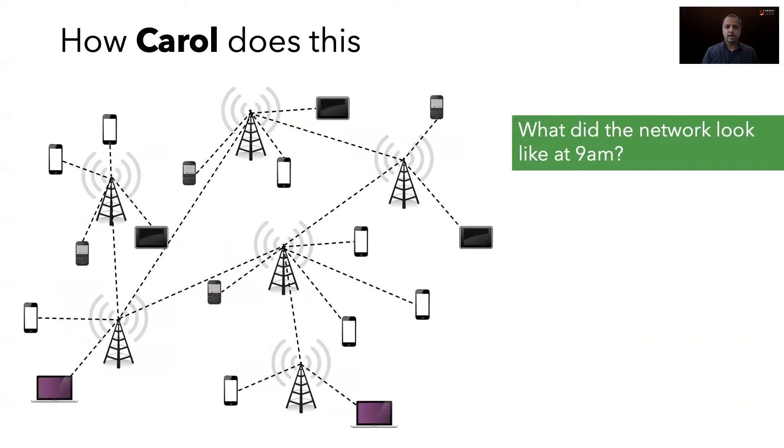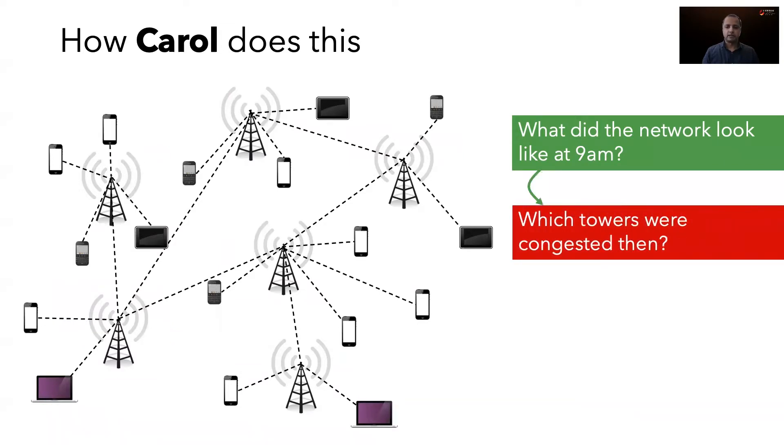Being a network expert, Carol suspects network congestion being the culprit. So she queries which of the towers experienced congestion at the time of the incident.